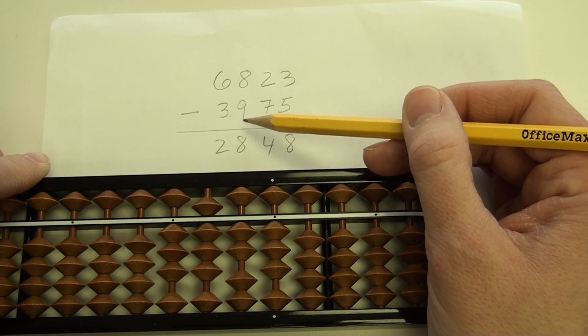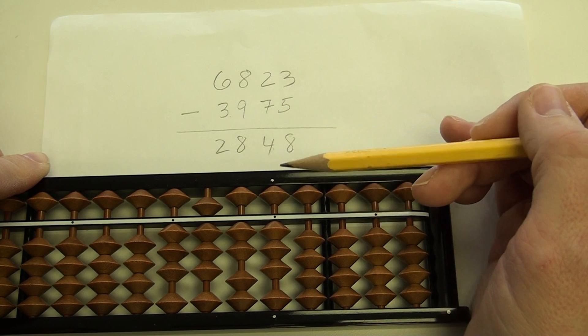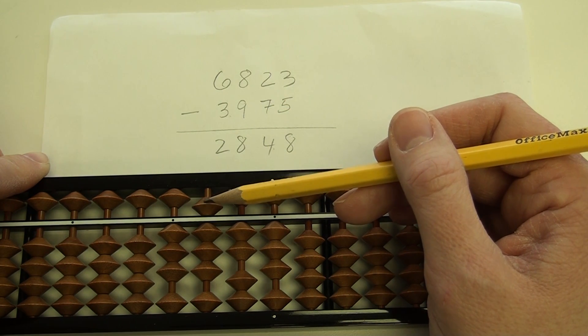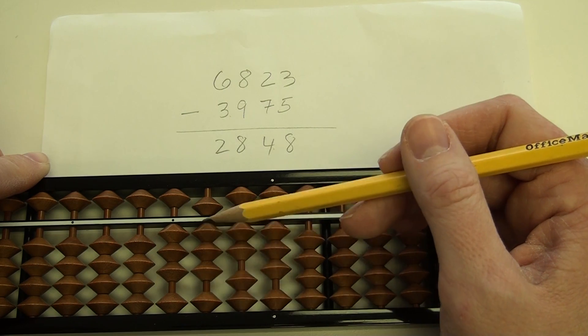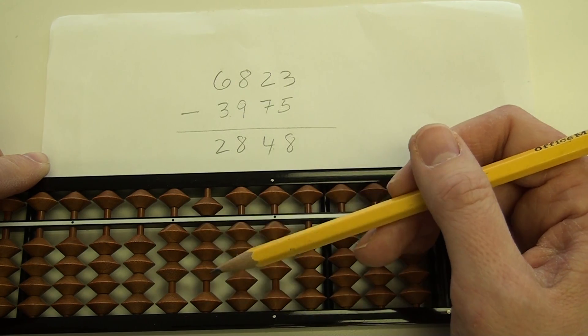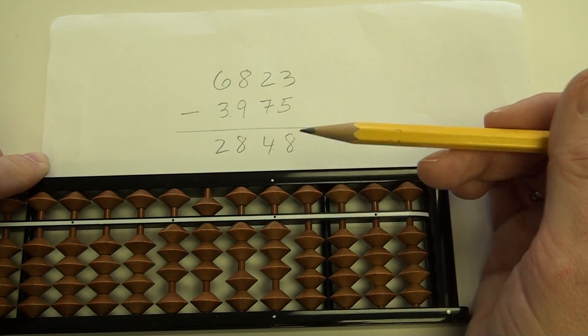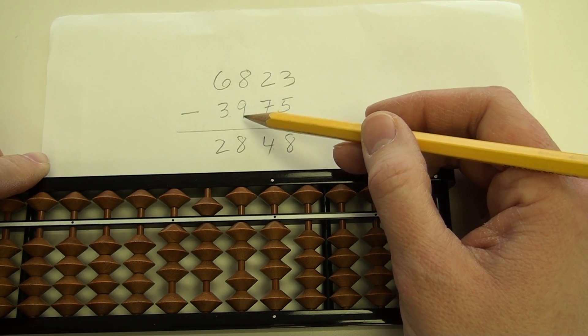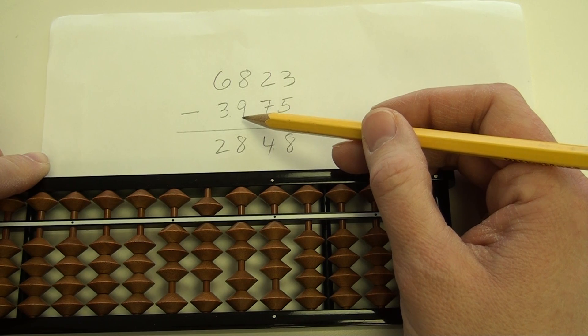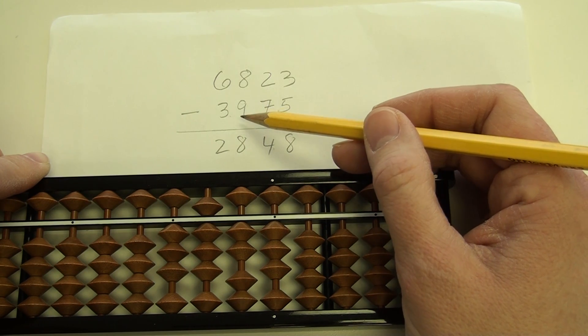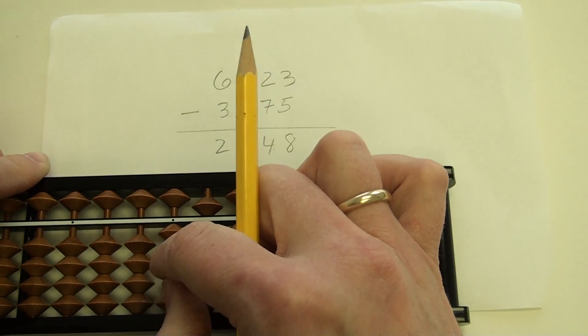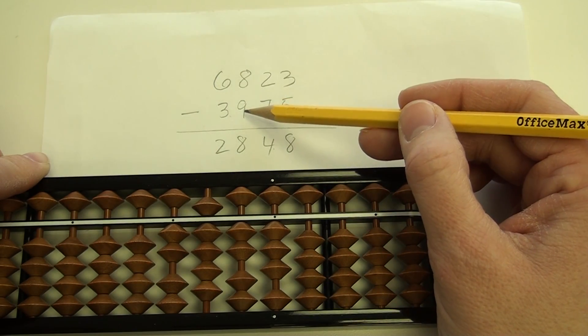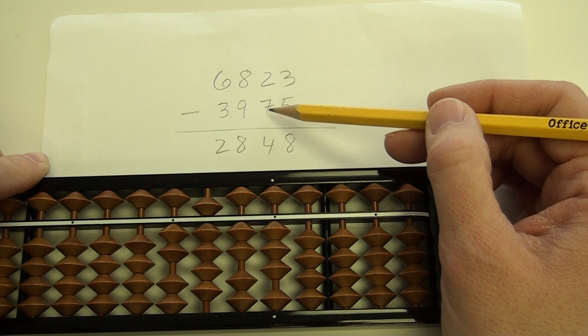So now I move now and subtract the 9. A 9 would be 1 heavenly bead, which is 5, and then 4 earth beads. But I don't have 4 earth beads, I only have 3. So I have to think again, and use the 10's complement. Instead of subtracting 9, I want to think of subtracting 10 and adding 1. So I'm going to subtract 10 and add 1. Now I've taken care of the 9, moving right.